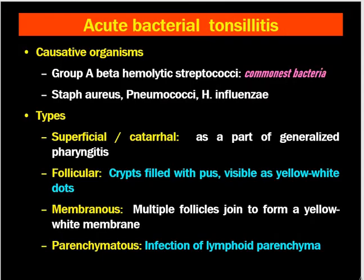Now let's discuss infection of the tonsils. Tonsils can be infected by environmental factors, local factors, bacteria, virus, or fungus. In acute bacterial tonsillitis, the patient presents with fever, chills and rigors, throat pain, and odynophagia. The commonest causative organism is Group A beta-hemolytic Streptococcus. Other organisms like Staphylococcus aureus, Pneumococcus, and Haemophilus pharyngitis may also cause tonsillitis.